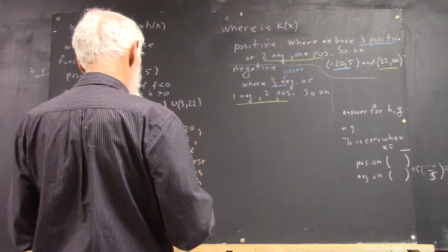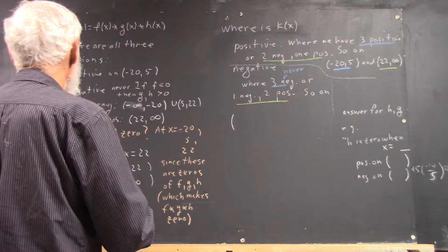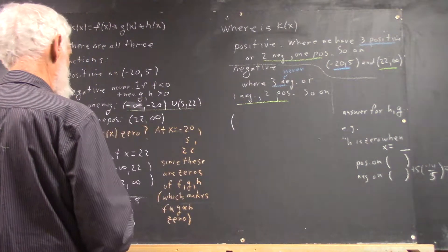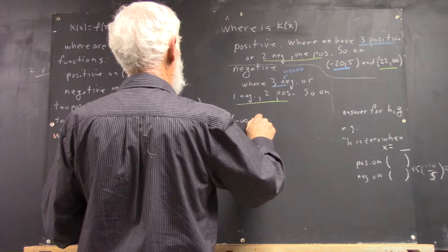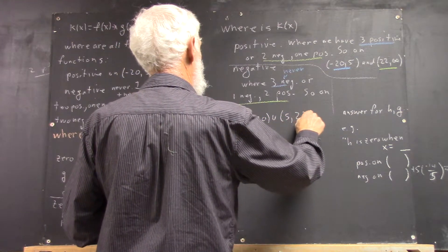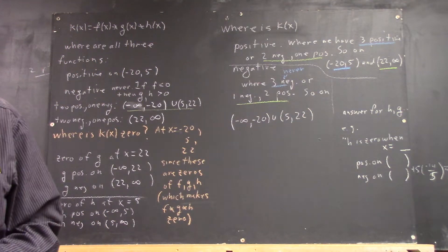So that's going to occur on what? It's going to occur on negative infinity, negative 20. And on 522. Okay?